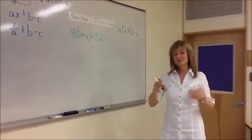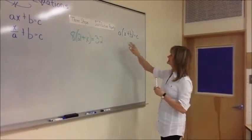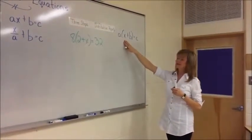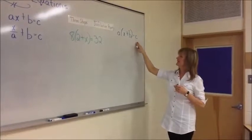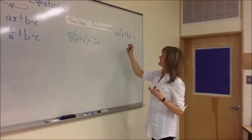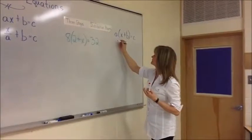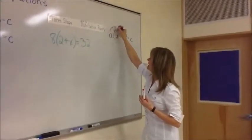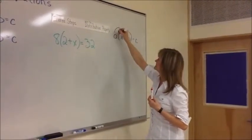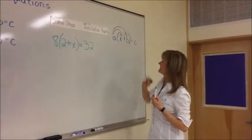This is using the distributive property, and this is the formula: A times, in brackets, X plus B equals C. But we could rewrite this, and I think we will, because this really means A times X and A times B.